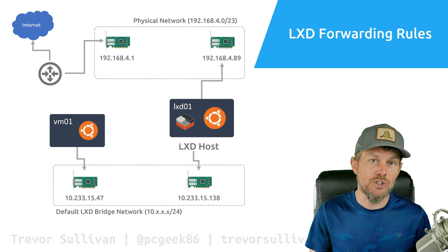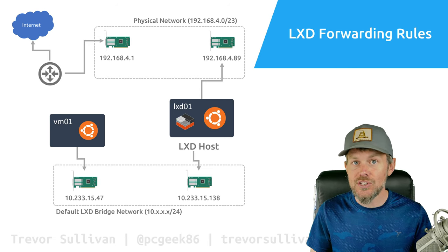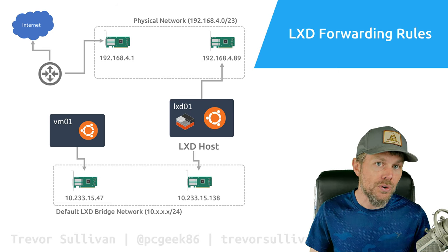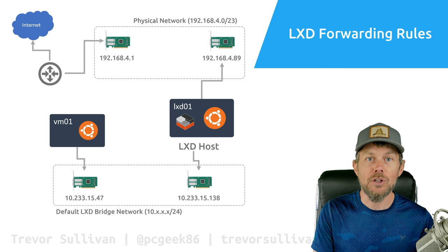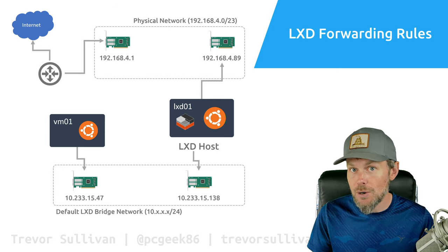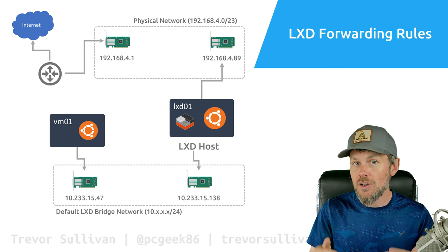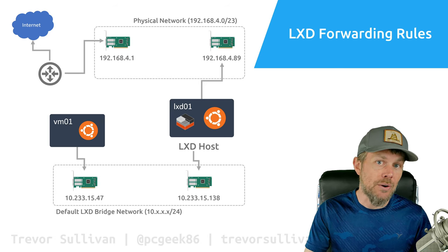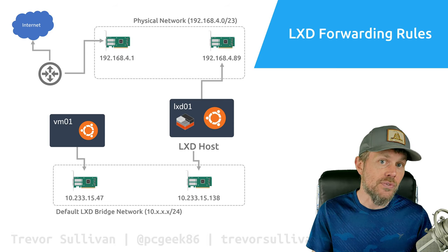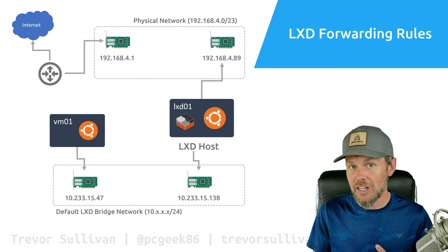The first way to provide inbound access to services running on virtual machines on your LXD host is to use forwarding rules. We can use the LXC command line tool to create these forwarding rules. This is very similar to the default configuration with Docker — if you've played with Docker containers, you're familiar with publishing a port from the container to the host so that a service inside the container is accessible on the host's physical network interface. This is very similar, only using LXD with virtual machines instead of Docker containers.